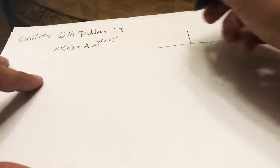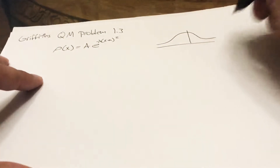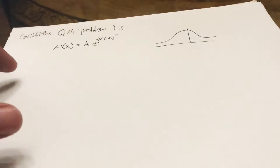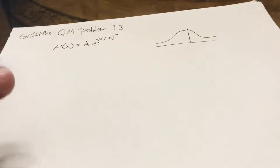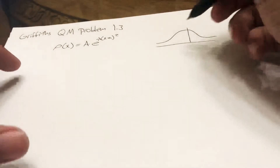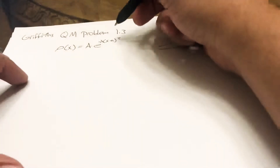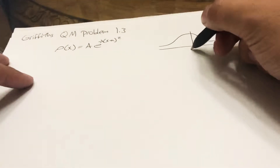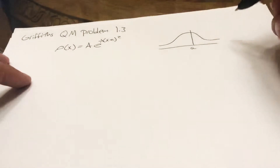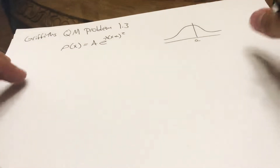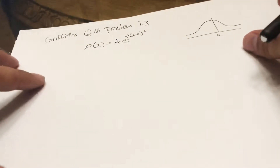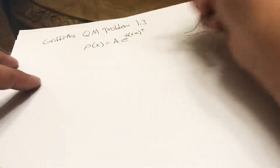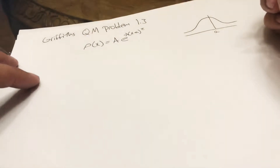Whenever we draw this out, it's going to look something like a bell curve — if you've ever taken a statistics course, it looks like that. Because this is a minus a term, the center is not at zero, it's going to be at a. So our first question is we need to find what this A is — our normalization constant.